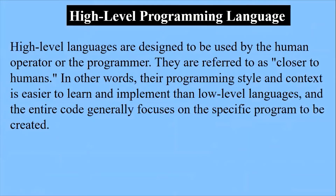Now, coming to high-level programming languages — there are two types of programming languages, but there is another called assembly language. Right now we will discuss high-level programming languages. High-level languages are designed to be used by the human operator or programmer. They are referred to as closer to human beings, meaning they are very easy to understand.